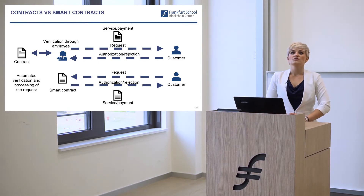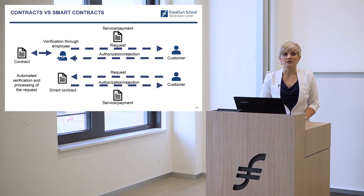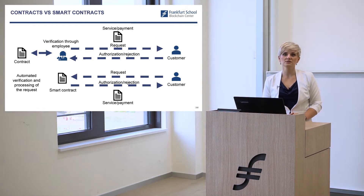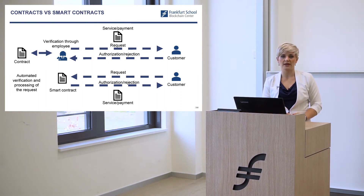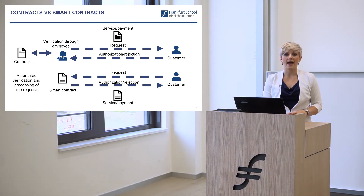Let me explain the difference between a normal contract and a smart contract. In the normal world, we have a paper contract verified by a lawyer or notary, where you agree to some service or payment. A request is sent when you use the service or when you have to make a payment, and then you either authorize or reject it. But if one party violates the contract, there have to be legal actions — you have to go in front of a court or involve a lawyer to enforce what the contract says.